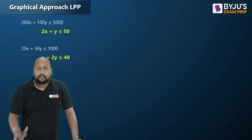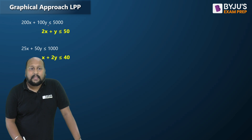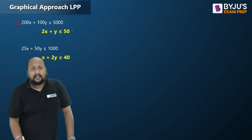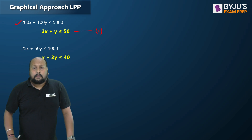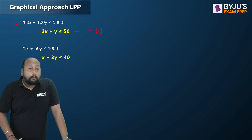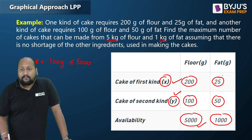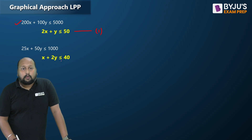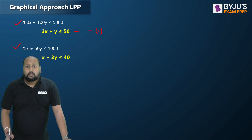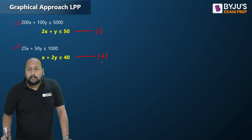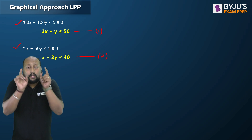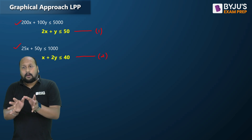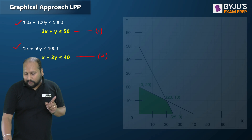Simplifying: the first constraint is 200x + 100y ≤ 5000. For the second constraint on fat: 25x + 50y ≤ 1000. So we have two constraints framed from the problem statement. Now we need to plot these on an x-y plane — the x-y graph — to find the feasible region.